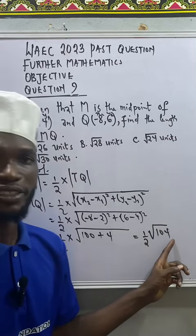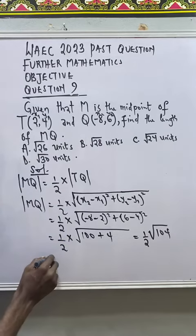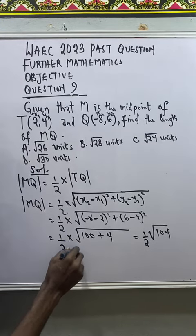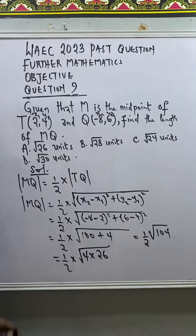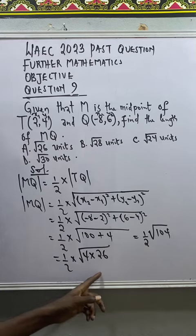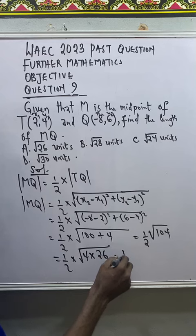I cannot leave my answer like this. I can still rewrite this in the basic form as 1 over 2 times square root of 4 times 26. 4 times 26 is going to give me 104. So square root of 4 is 2.